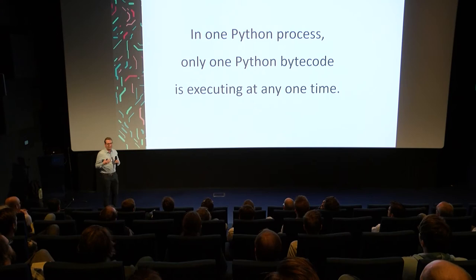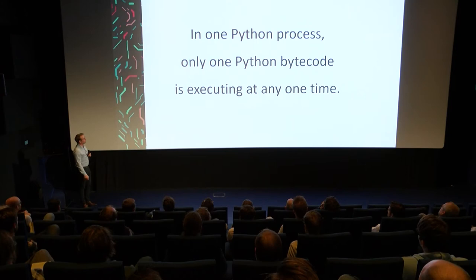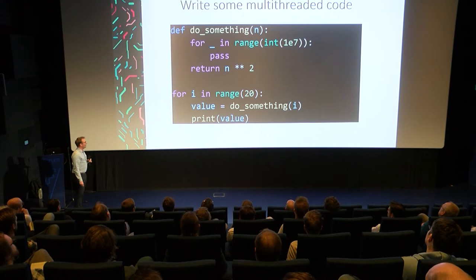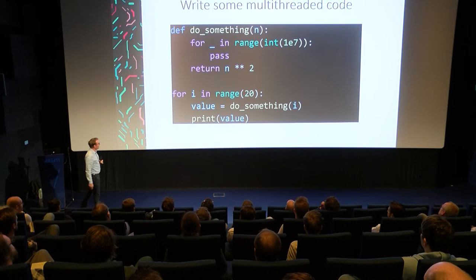The implication of the GIL is that in one Python process, only one Python bytecode is executed at any one time. To see what this means in practice, we'll write some multi-threaded Python code. Let's say we have a function called do_something that does a bunch of nothing, and we want to call that function 20 times.